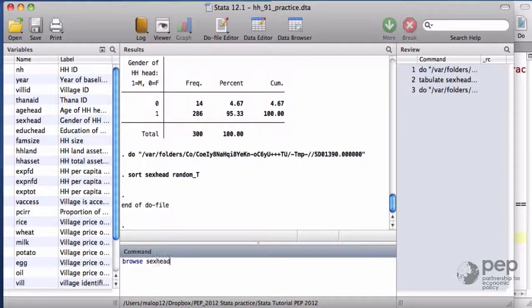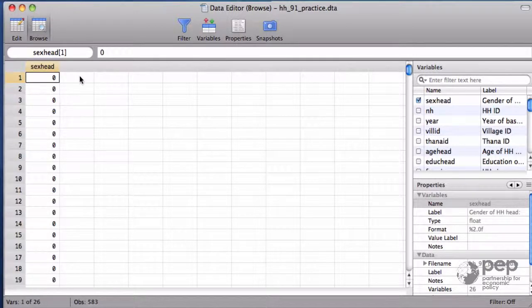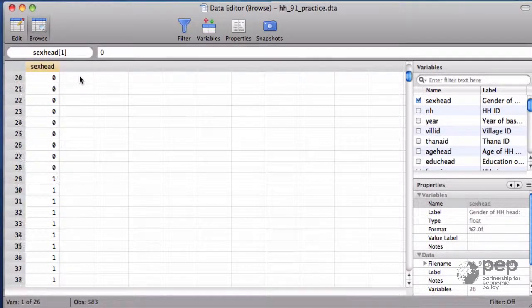If I browse the gender, I see all the female households first, there are few, and then male households after.